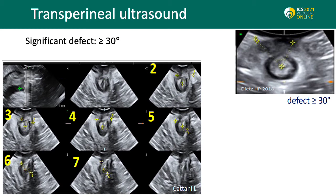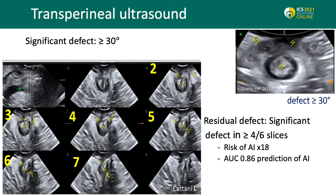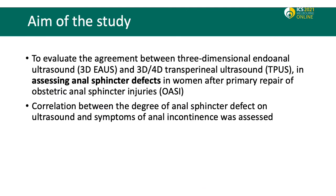A defect of more than 30 degrees after primary repair, as demonstrated in the picture on the right, is considered significant. A residual defect is diagnosed if a significant defect in 4 out of 6 slices from slices 2 to 7 is noted, as demonstrated in the picture on the left. Both the grade of the tear as well as residual defects in the external anal sphincter have shown a strong correlation with anal incontinence.